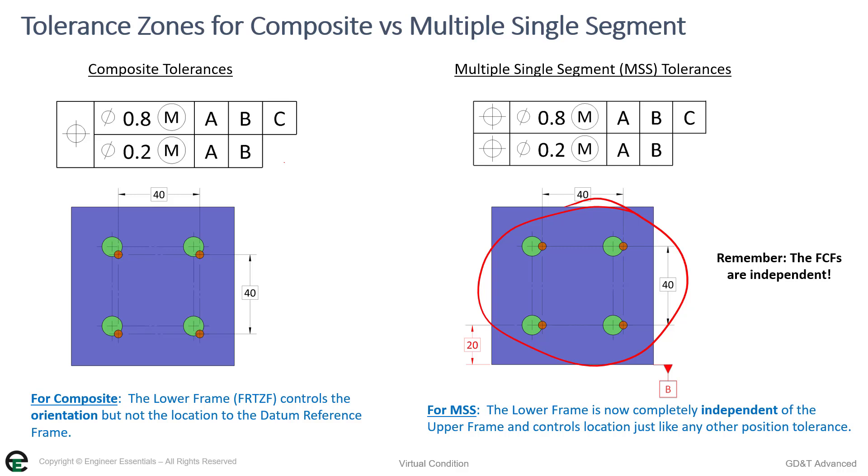Up, down, left, right, rotate around, do all of that. But the second we add in another one over here and use it as multiple single segment, as you can see here, it gets locked on the basic dimension and can only move side to side.